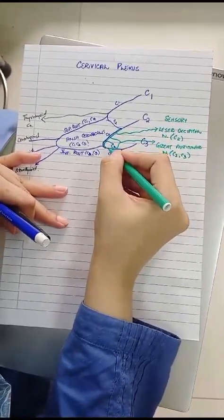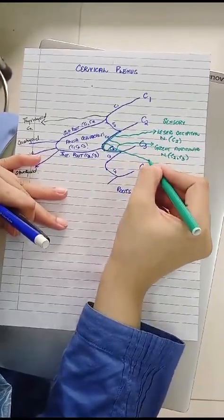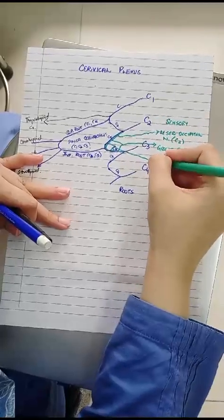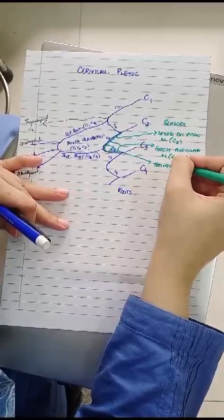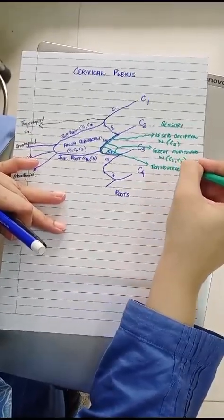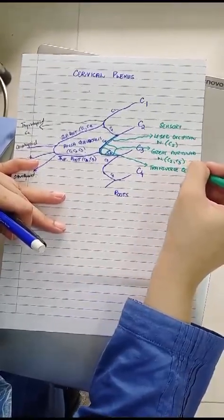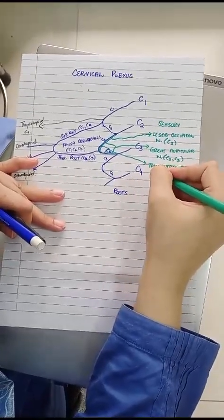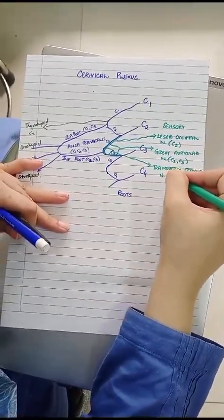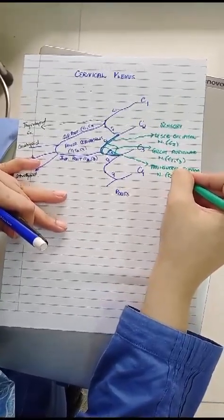Third contribution is also by C2 and C3 and the name of that nerve is transverse cervical nerve. This nerve is responsible for supplying the anterior region of the neck by dividing into ascending and descending branches. Root value would be C2 to C3.